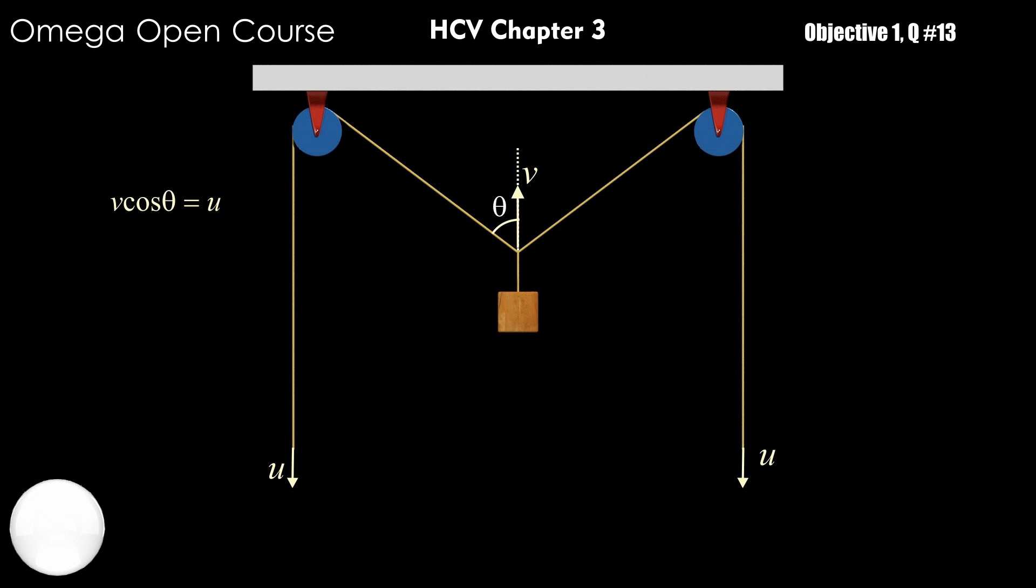Since the length of the string is fixed, the end of the string must move away with the same speed as the point moves closer to it. Therefore, u must be equal to vcos theta.